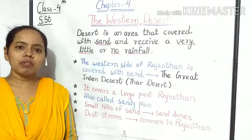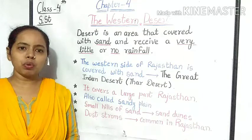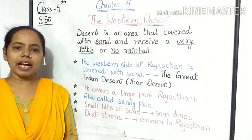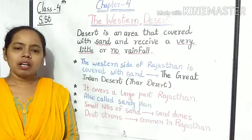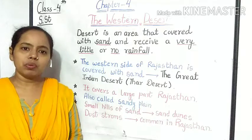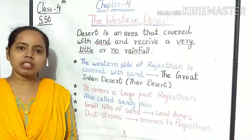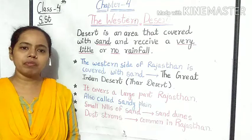Students, before starting the chapter, take your book and open chapter number 4 at page number 27. You all have to underline all the hard words of this chapter and write their meaning with the help of a dictionary.